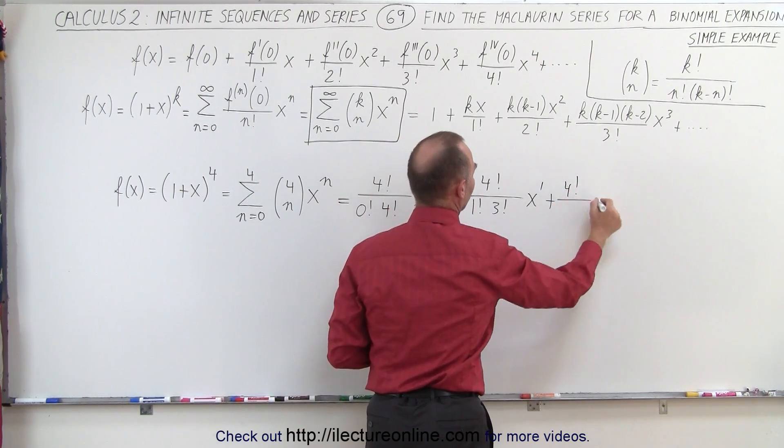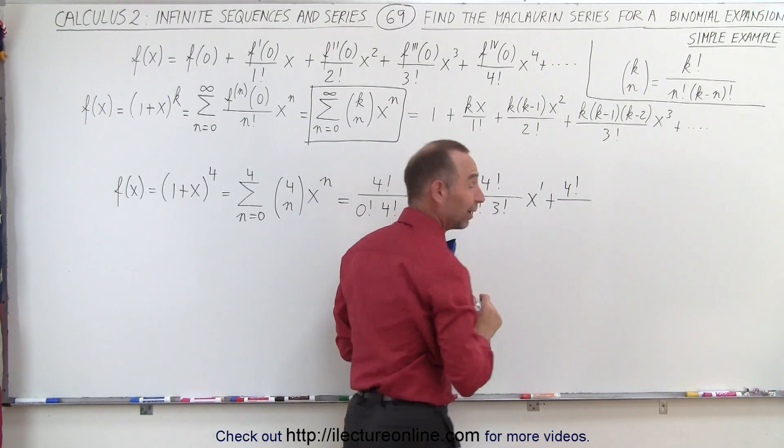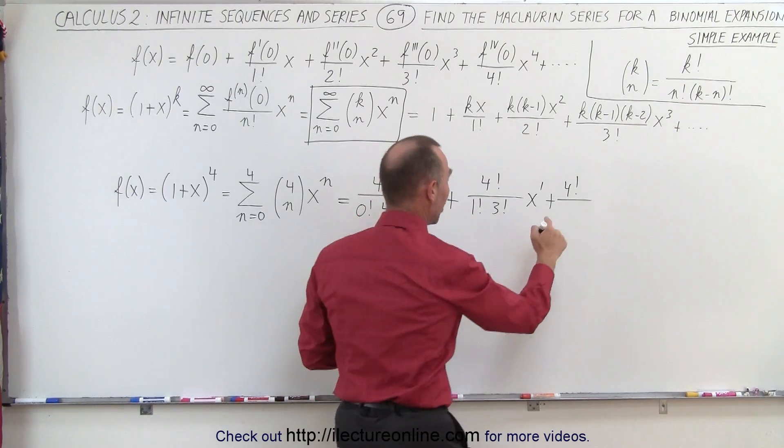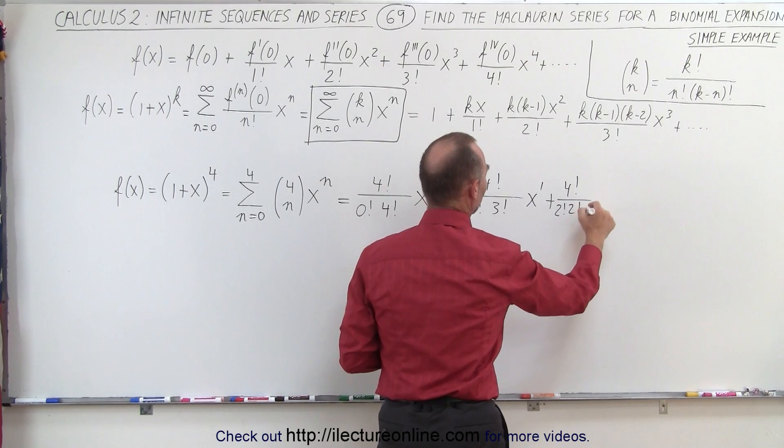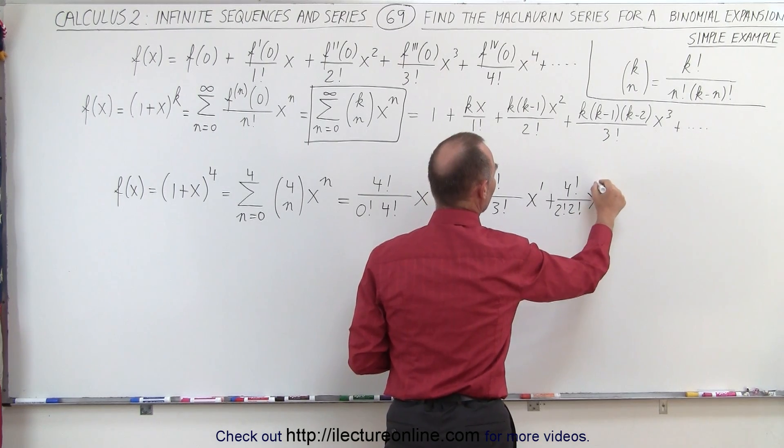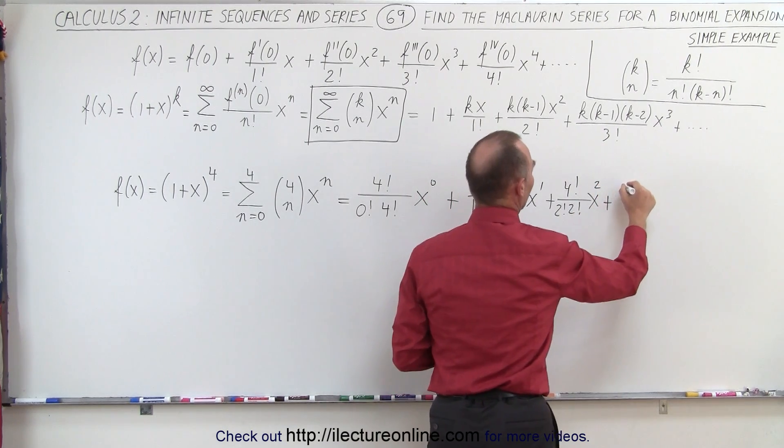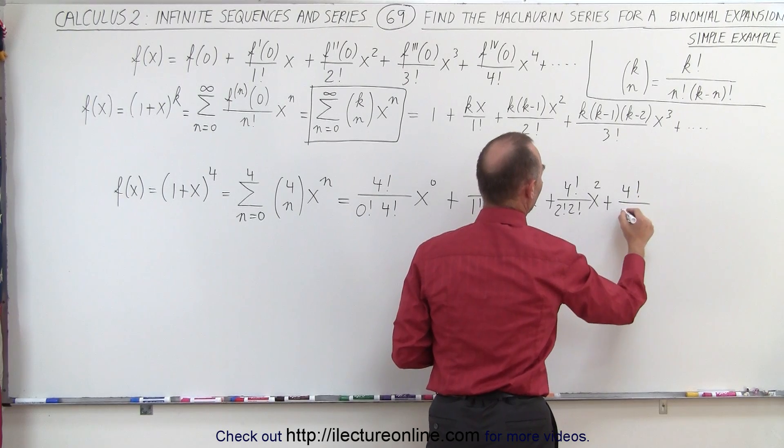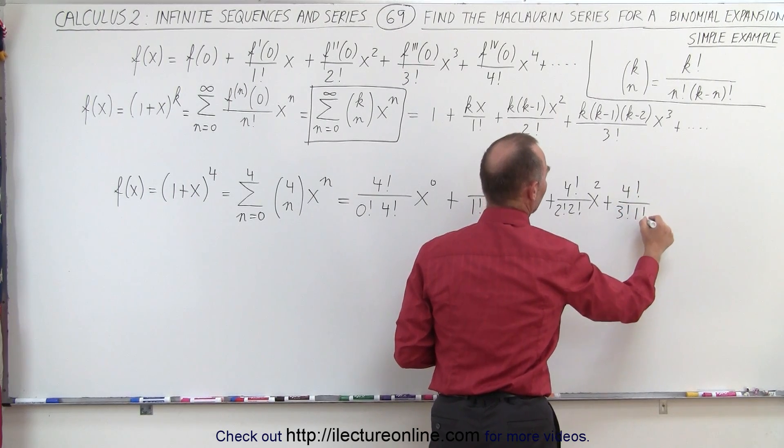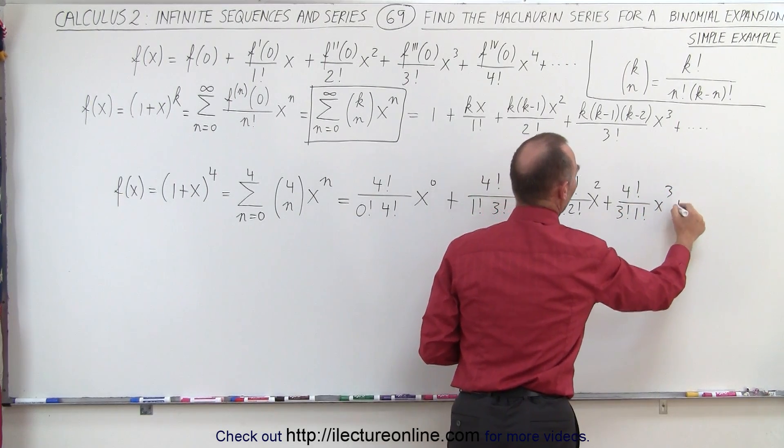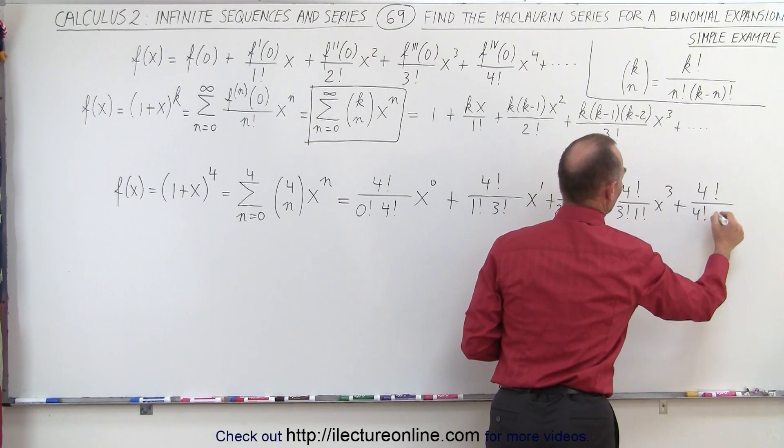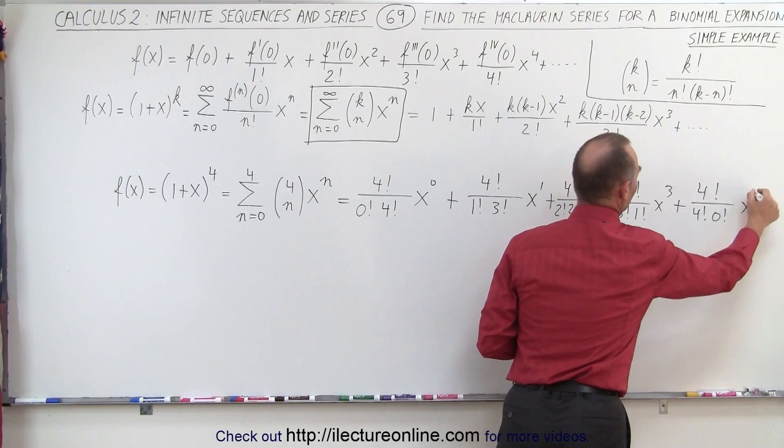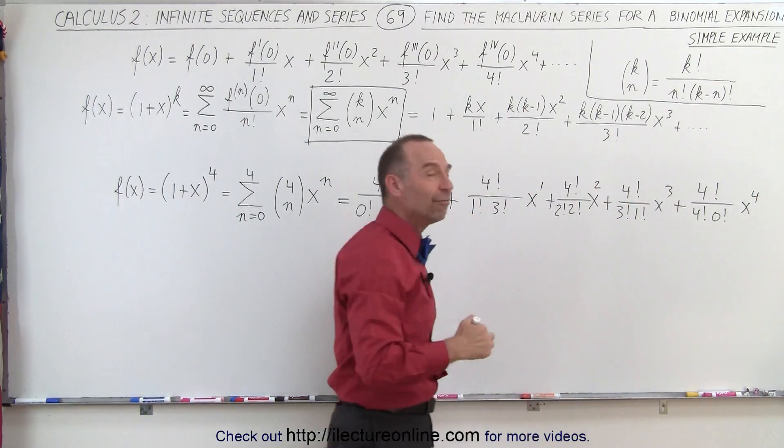Plus 4 factorial divided by, and I think I'm going to run out of room here, so I better write a little smaller. So we have 2 factorial times x to the 2nd power, plus 4 factorial divided by 3 factorial 1 factorial x cubed, plus 4 factorial divided by 4 factorial 0 factorial x to the 4th power.